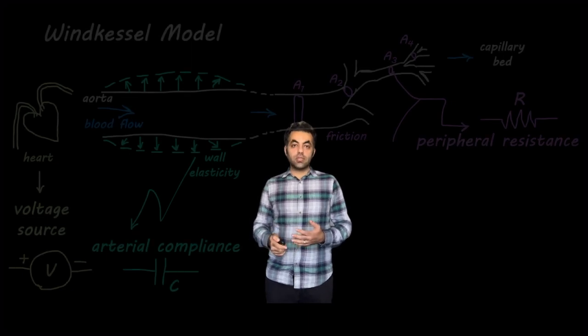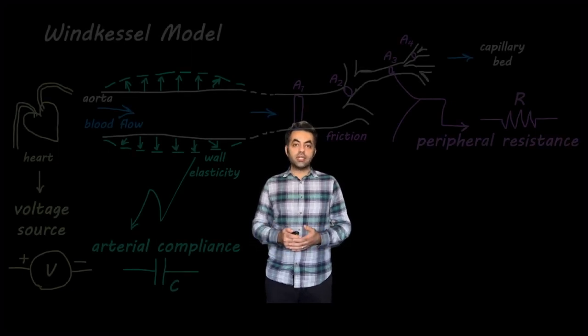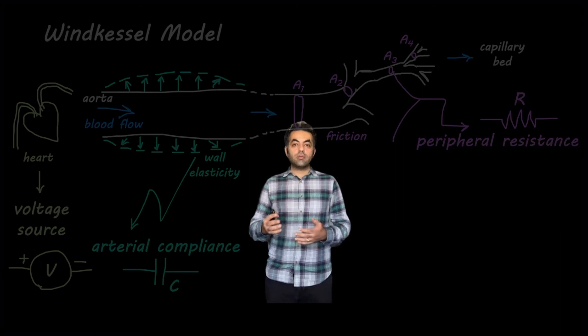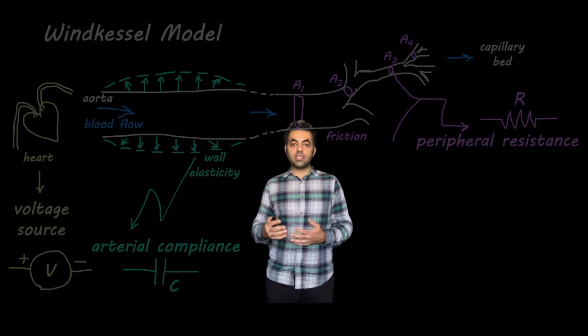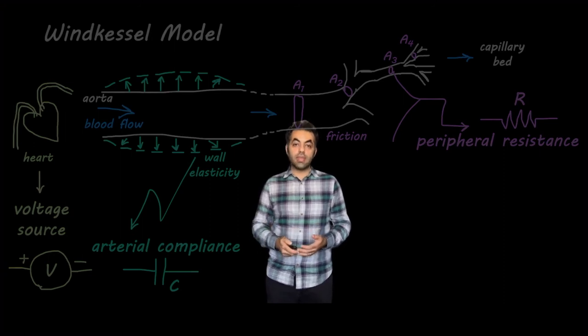So a voltage source in an electrical circuit would be a good example of what our heart does in the cardiovascular system.